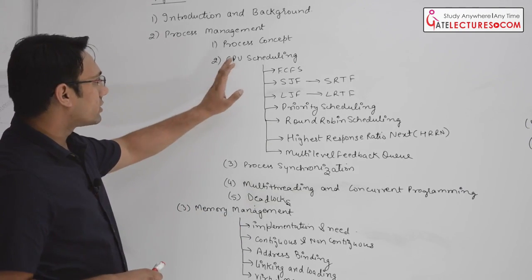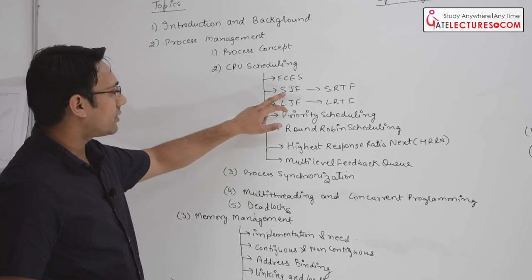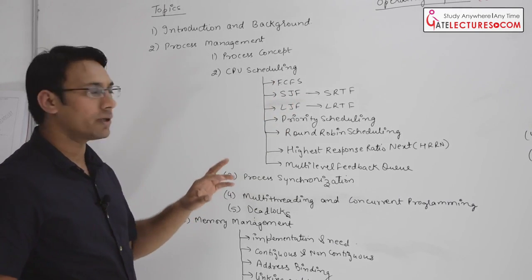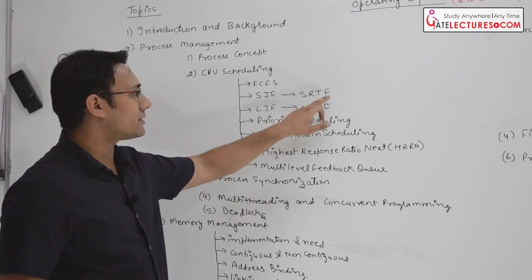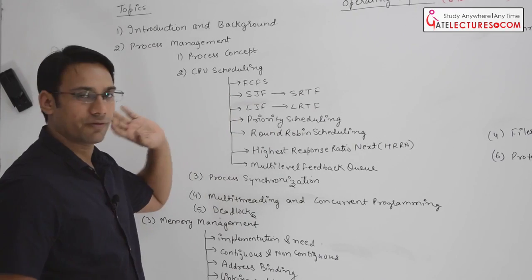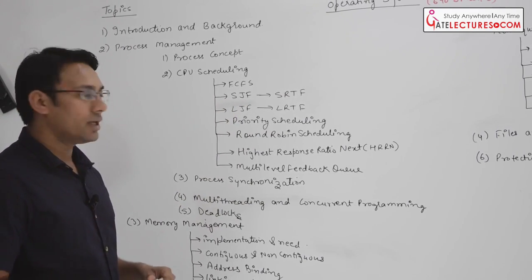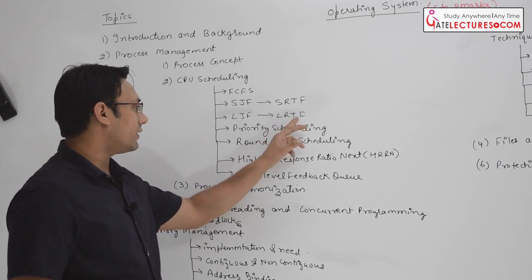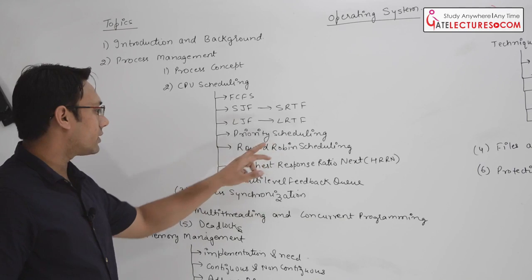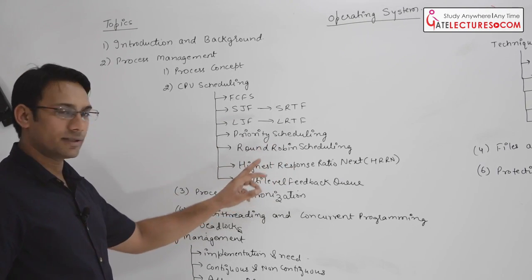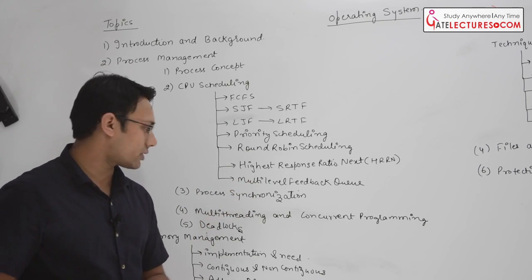Then we are going to discuss CPU scheduling, where we have first come first served scheduling. Then shortest job first scheduling, shortest remaining time first scheduling, longest job first scheduling, longest remaining time first scheduling, priority scheduling, round robin scheduling, highest response ratio next scheduling, and multi-level feedback queue scheduling.